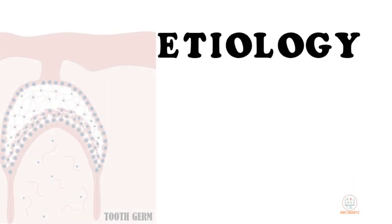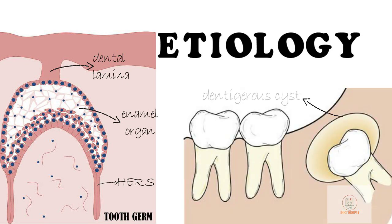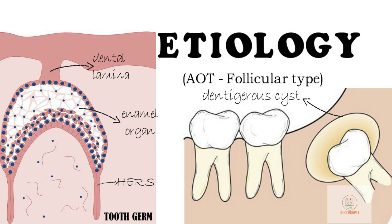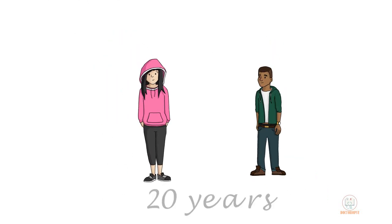AOT may arise from remnants of the dental lamina or Hertwig's epithelial root sheath. They can also arise from any component of the enamel organ. The epithelial lining of a dentigerous cyst is also considered an important source, especially in the follicular type of AOT.